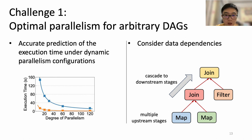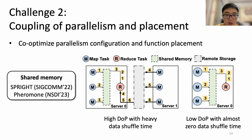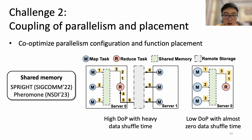However, achieving such elastic parallelism is non-trivial due to the following challenges. First, elastic parallelism scheduling requires an accurate prediction of execution time under dynamic parallelism configurations. Calculating the optimal parallelism also needs to consider data dependencies, which can be very complex in arbitrary DAGs. Second, recent state-of-the-art serverless frameworks have proposed shared memory for high-speed intra-server communication, making function placement relevant to parallelism configuration. For example, in a MapReduce job, we can choose high parallelism for the map stage, but intermediate data must go through slow remote storage; or we can decrease parallelism to let data go through fast shared memory. It is uncertain which case has smaller JCT.